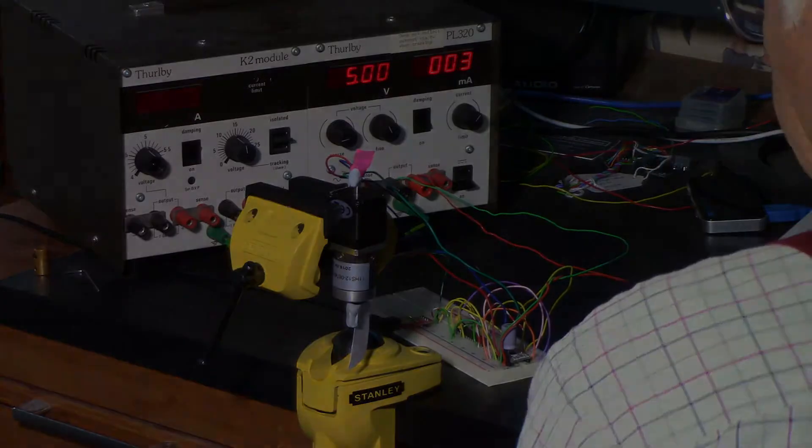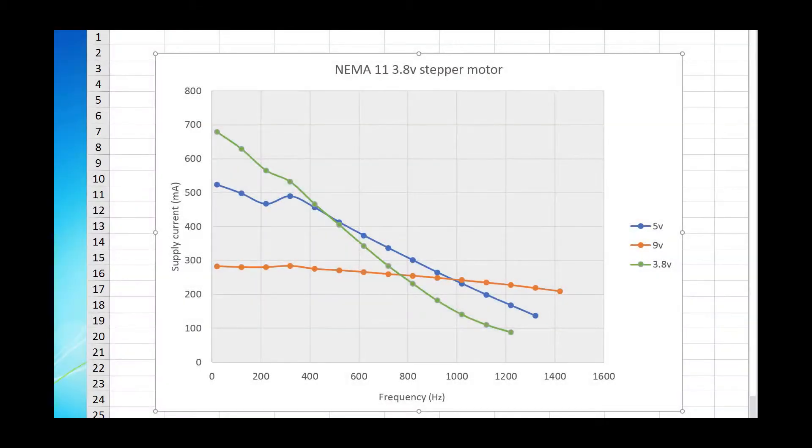So I plotted these results. The blue line is with a motor voltage of five volts. I'm not quite sure what this kink is about here but it seems to be present in all three curves. I also did it at the green line at 3.8 volts motor supply and also at 9 volts.